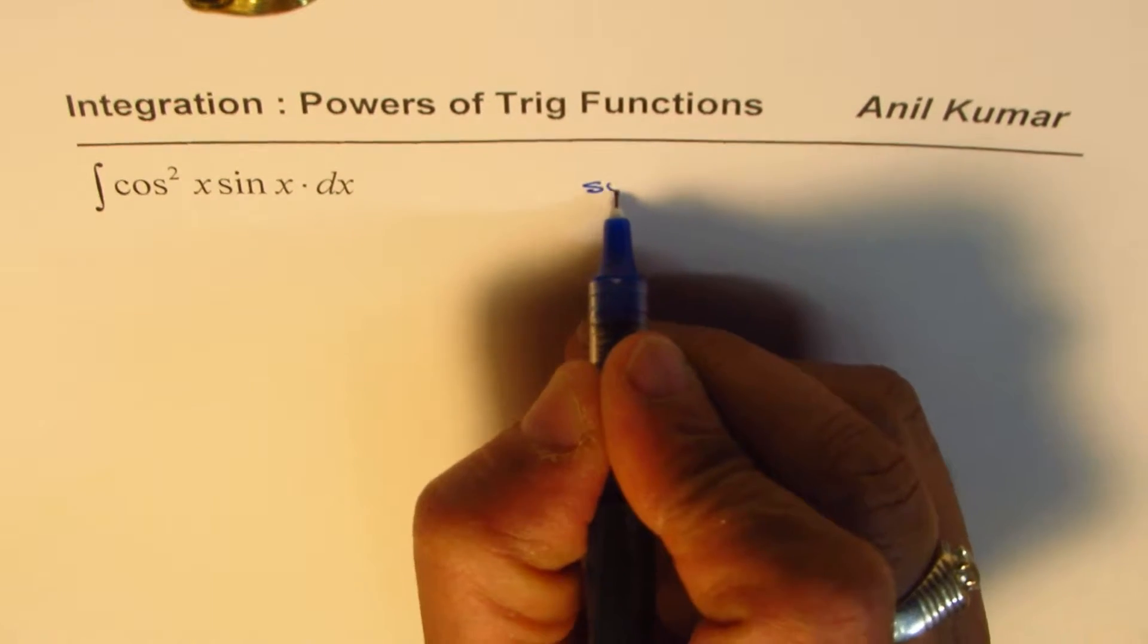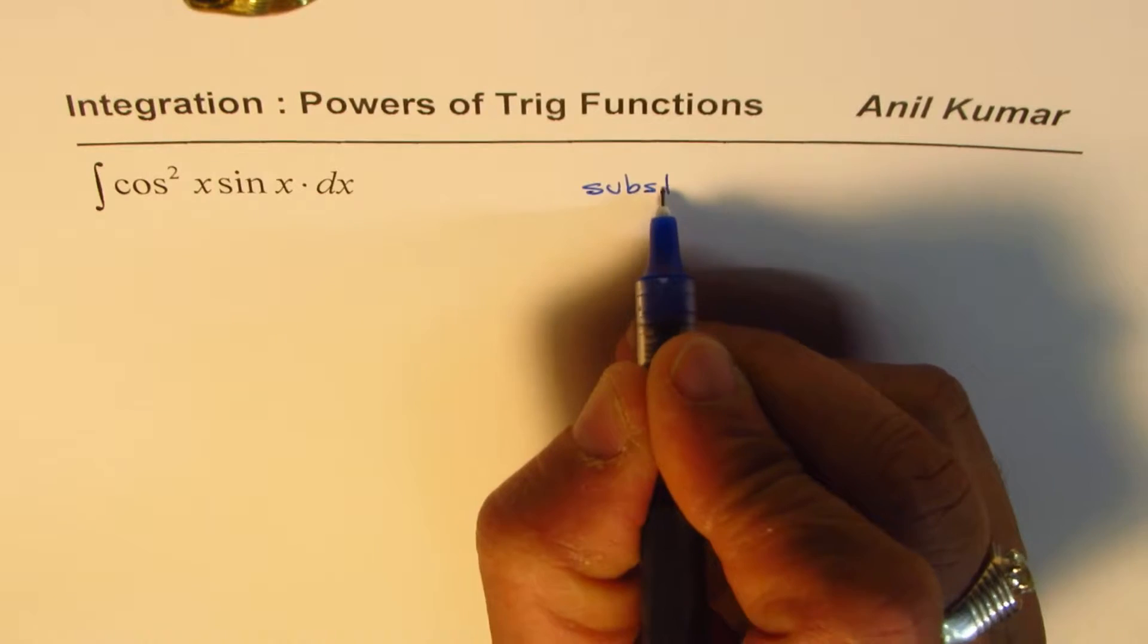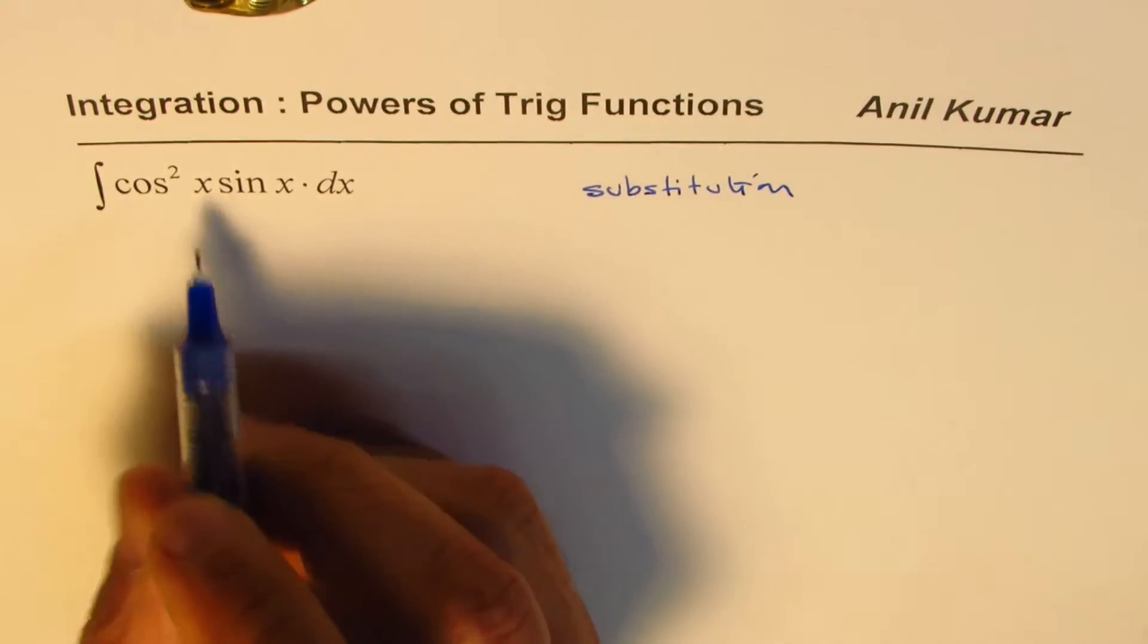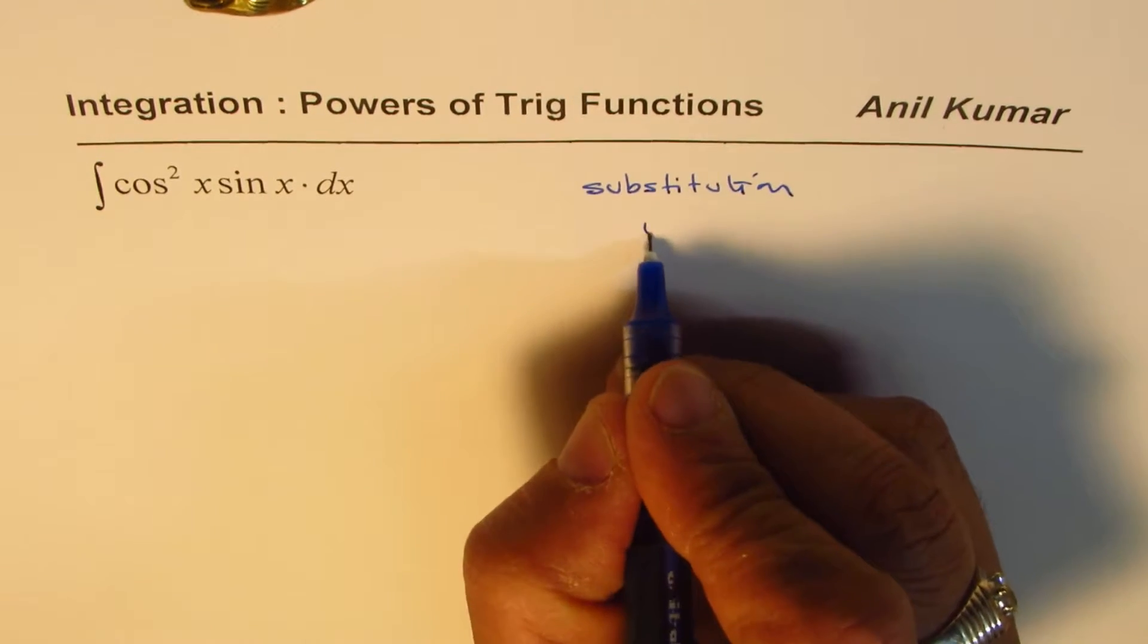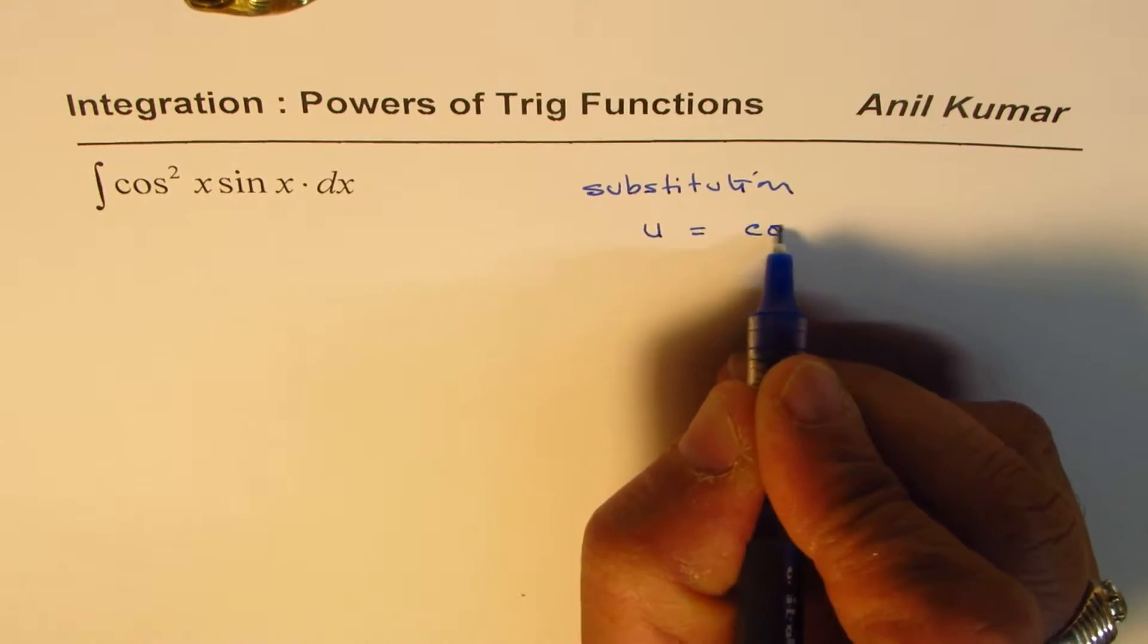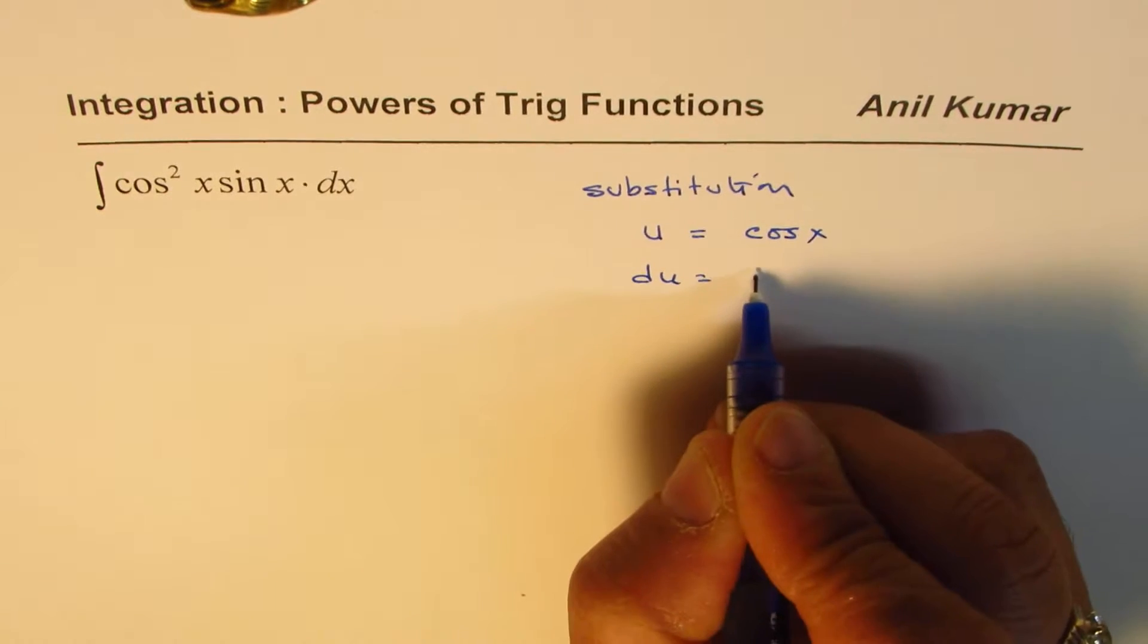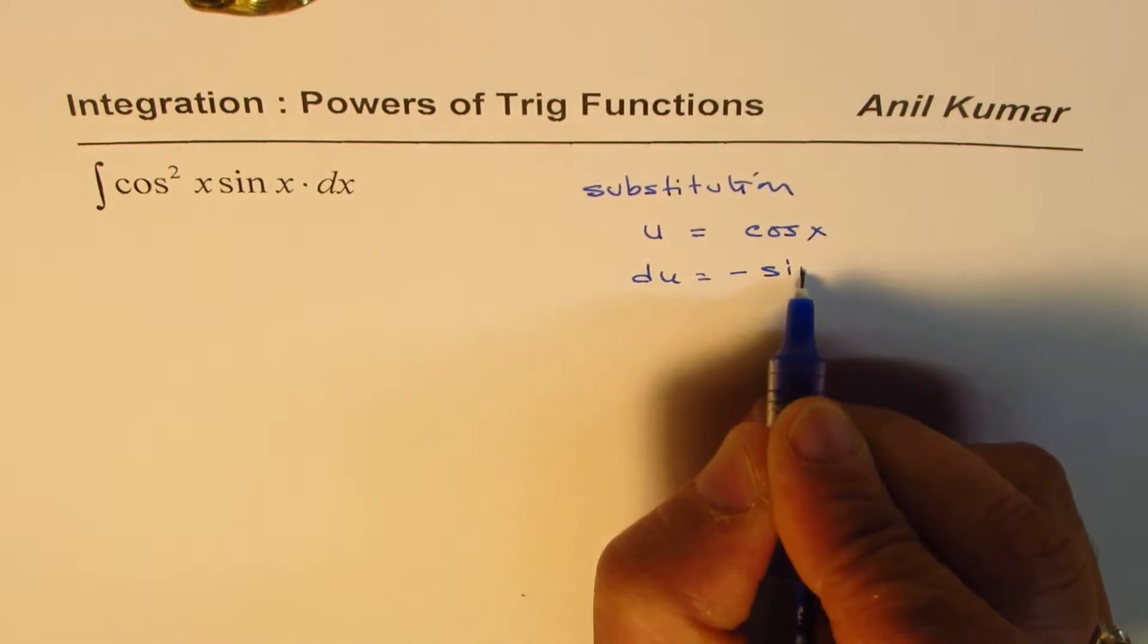Now we can do a substitution to find the answer. Substitution could be, since you know the derivative of cos is sin, so we could have u equals cos x. In that case, du will be minus sin x dx.